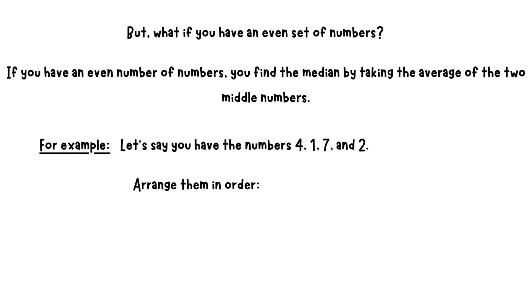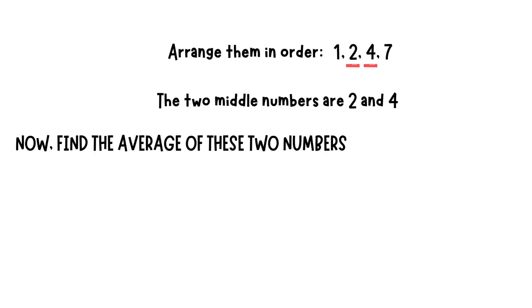First arrange them in order like we did before, which will give us 1, 2, 4, 7. The two middle numbers are 2 and 4. Now find the average of these two numbers.